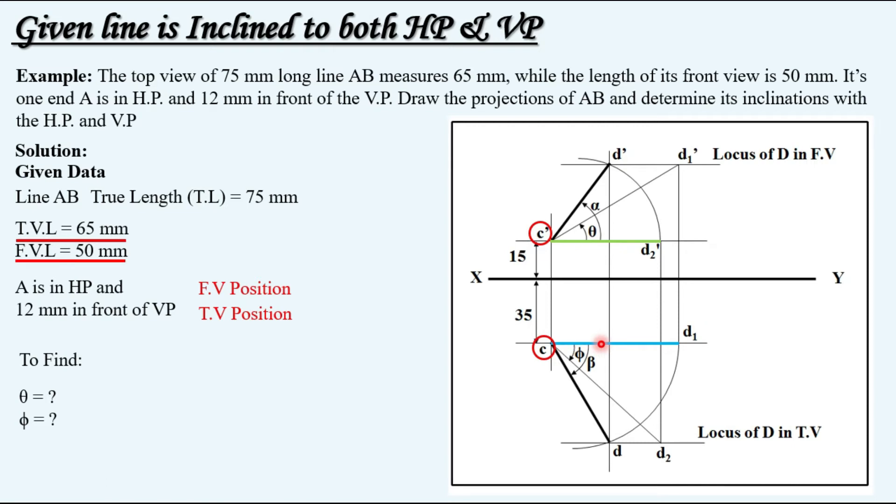Once we have drawn up to here as we can see on the solution this was obtained because of this projector. So once we have this we can go in a reverse manner drawing this projector. And similarly this was obtained from here, vertical projector was drawn up and then we have obtained this length. So we can draw a vertical projector from this position as well.